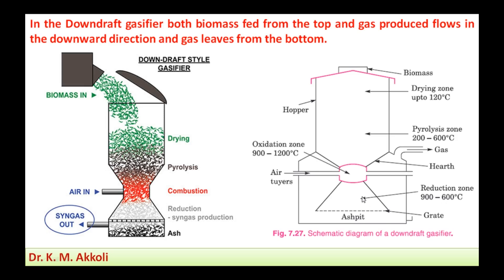Ash after combustion falls through a grate. In the drying zone the moisture content is given off; in the pyrolysis zone volatile matters are given off; and in the oxidation zone partial combustion of the biomass takes place. In the reduction zone, whatever combustion products are present are reduced — carbon dioxide and water vapor are reduced to form carbon monoxide and hydrogen.